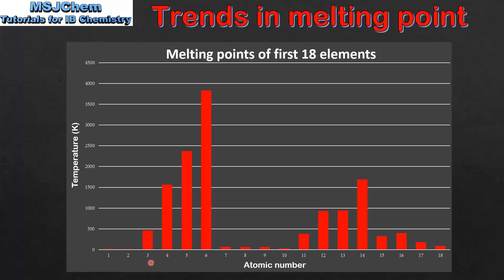That's lithium with atomic number 3 up to neon with atomic number 10. As we go from left to right across period 2 we see an increase in melting point as we go from lithium to beryllium to boron to carbon. We then see a big decrease in melting point as we go to nitrogen and then oxygen, fluorine and neon.